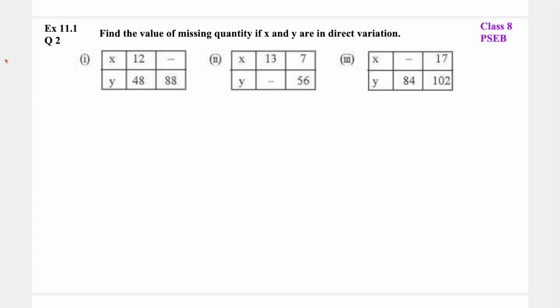Second question: Find the value of missing quantity if x and y are in direct proportion. You have to find the missing quantities. Since x and y are in direct proportion, we know that x1 upon y1 equals x2 upon y2, because the ratio is constant. We denote this constant as k.